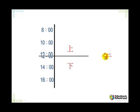So anything above that line is the 上. Yes, and anything under it is 下.